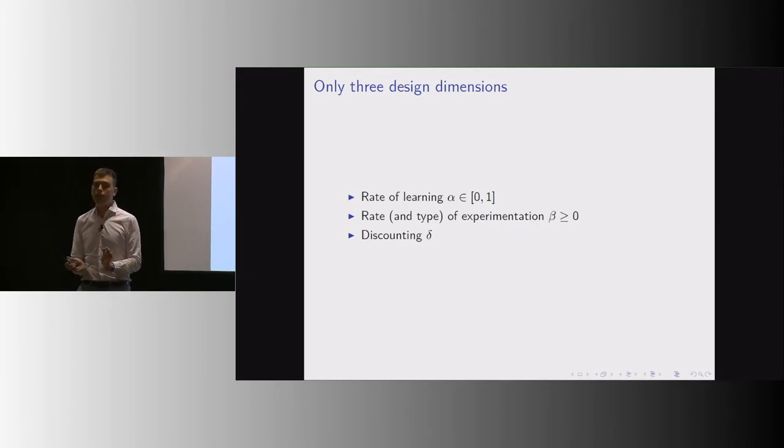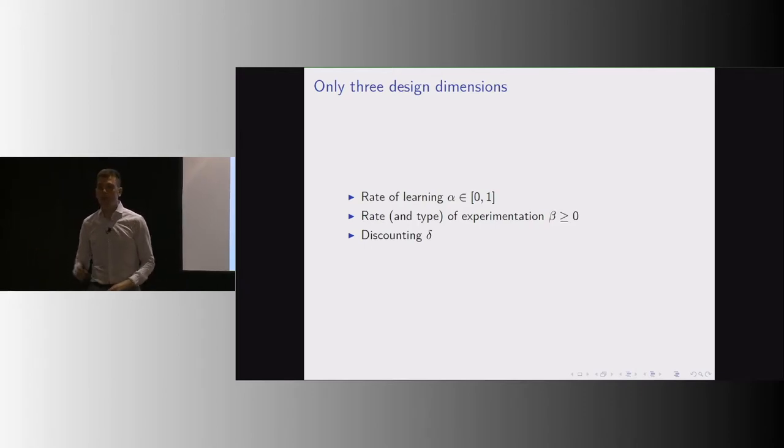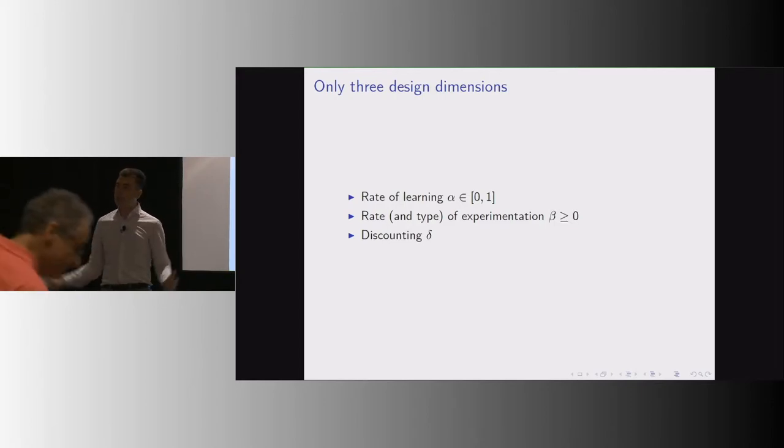There are just three key parameters here. The first one is alpha, which tells you at which speed the new information coming in from these rewards is incorporated into the existing body of knowledge. The second parameter is the extent of experimentation beta, and the third parameter is the discount factor.